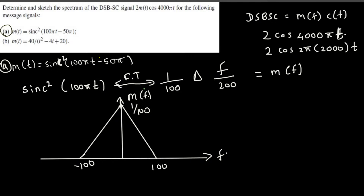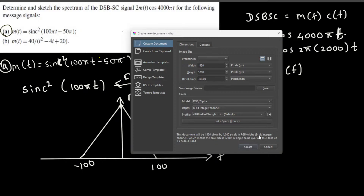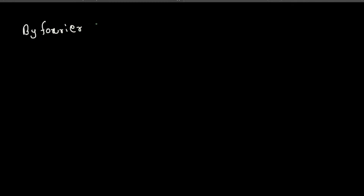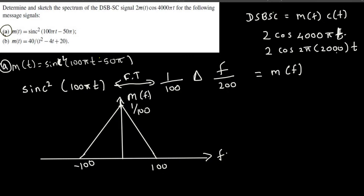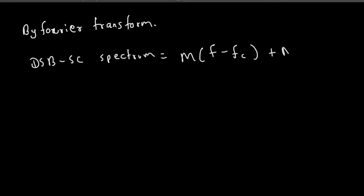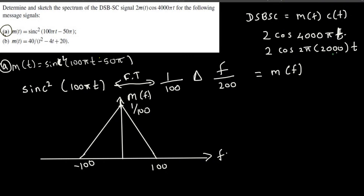We can also express this using the Fourier transform of the given signal. The Fourier transform of the DSB-SC spectrum is given by: M(f - fc) + M(f + fc), where fc is the carrier frequency of 2000 Hz. So the DSB-SC spectrum is the message spectrum shifted to both +2000 and -2000 in the frequency domain.